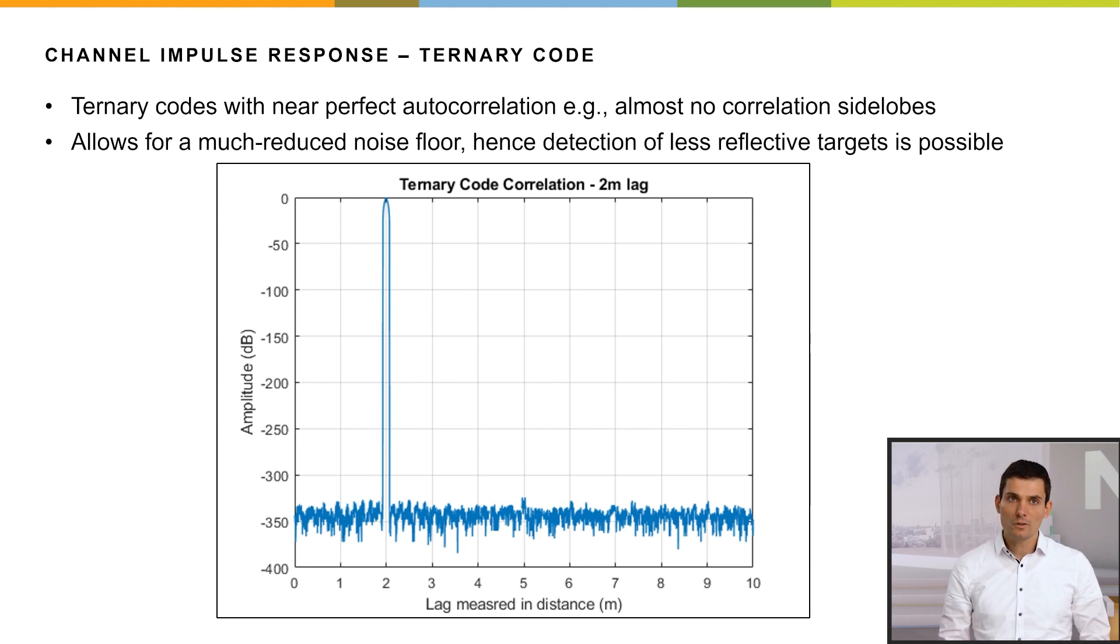We are using ternary codes with near-perfect autocorrelation. That means we have almost no correlation side lobes. In other words, we have a much reduced noise floor, and therefore we can detect less reflective targets if necessary. We see such a channel impulse response, or CIR, in this slide below.